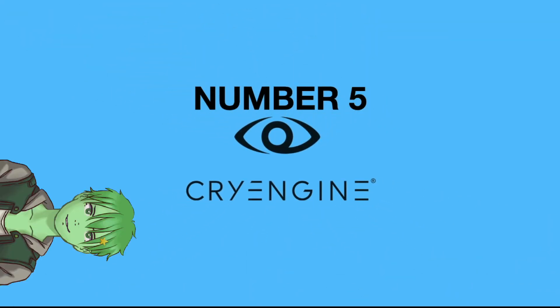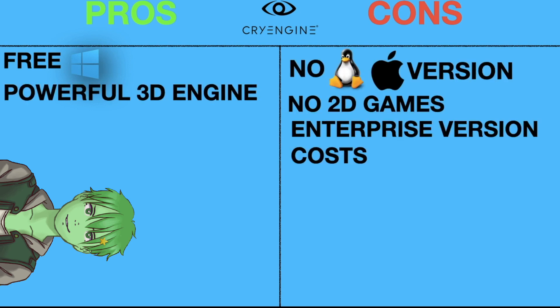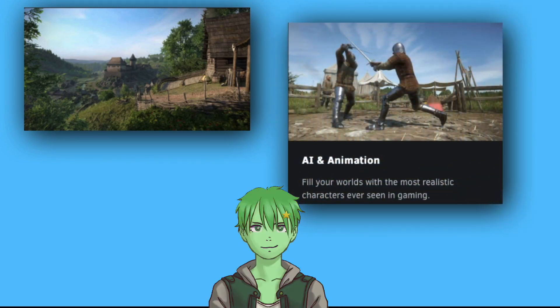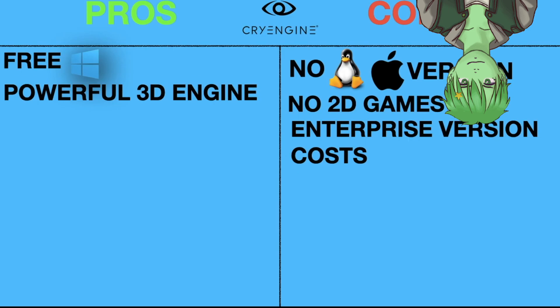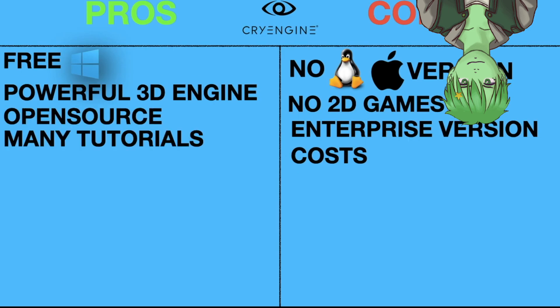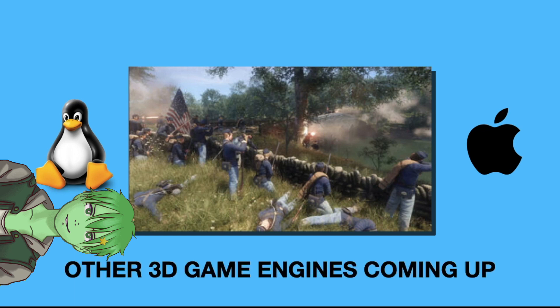Number 5: CryEngine. CryEngine is a free game engine for Windows which is mostly known for its powerful 3D support. The personal edition is free, but there is also an enterprise version for making games in a team, which is not free. It comes with a powerful terrain-forming tool, and you can create realistic game AI and animations with it. CryEngine has a built-in high-end physics engine so you can create realistic physics for your 3D games. The visuals feature HDR with realistic lighting, reflections and much more. The engine is open source and there are many tutorials to help you get started. It is a great game engine for making 3D games, but it is only available on Windows — not Linux or Mac.